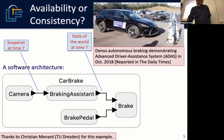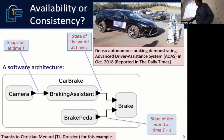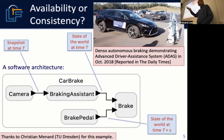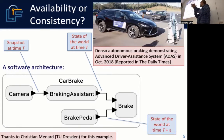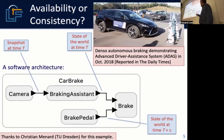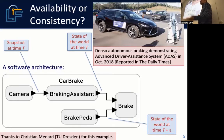The brake pedal sensor also represents the state of the world at the time when the driver pushes the pedal. Suppose the camera has taken a frame at time T and the brake pedal gets pushed just slightly later — a millisecond later.